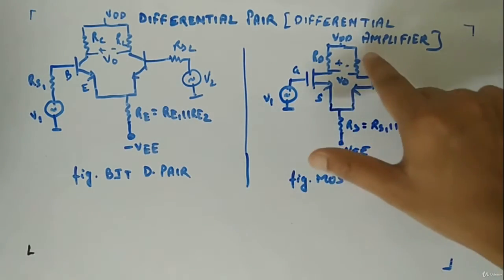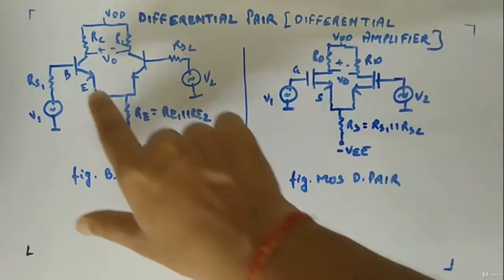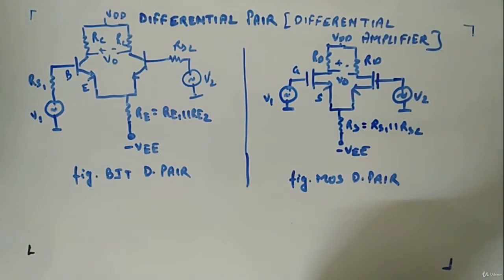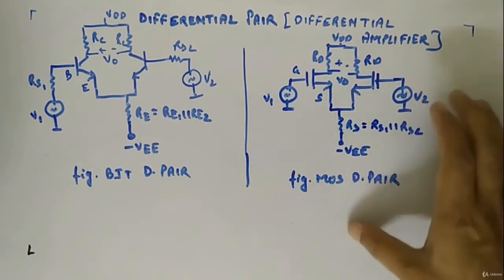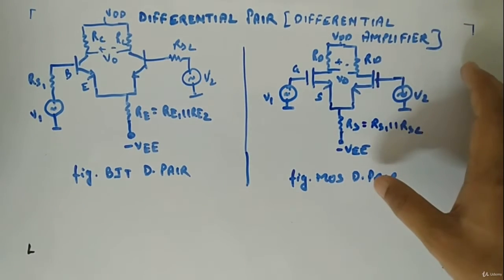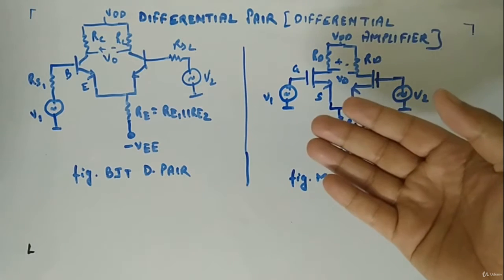This is gate, source, drain; gate, drain, source. Similarly, base, emitter, collector; base, emitter, collector. So this is how it will look like. It will be a part of a big circuit, just as I showed in op amp.